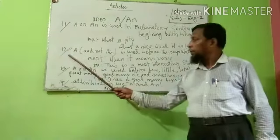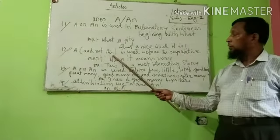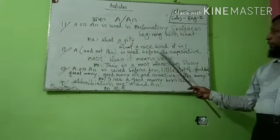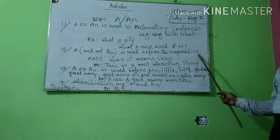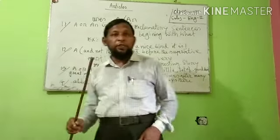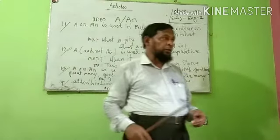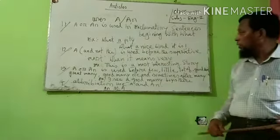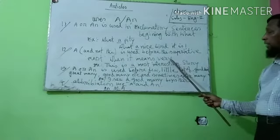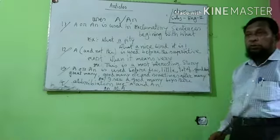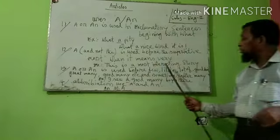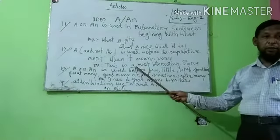Number twelve: A and not THE is used before the superlative degree when it means 'very'. You know degrees — positive, comparative, and superlative. When superlative means 'very', use A. Example: This is a most interesting story.